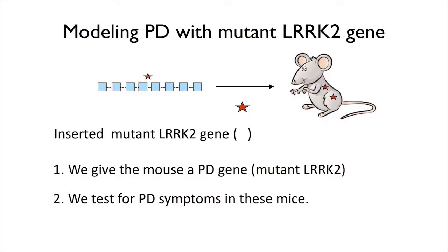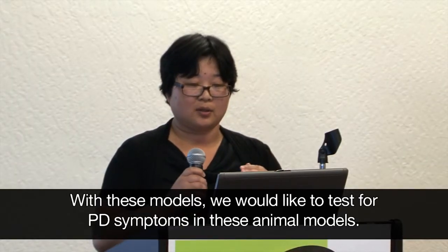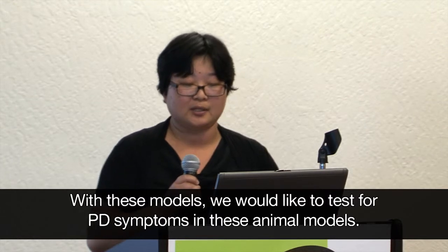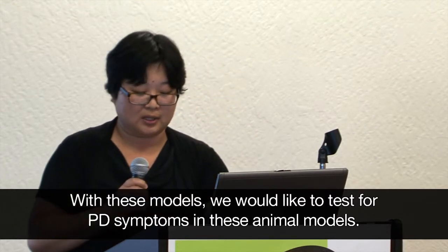What we do is we give the mouse a PD gene. Here, we use the muting LAC2. It means this is from a human patient's mutation. And this will cause the human to have the PD phenotype, the symptoms. With these models, we would like to test for the PD symptoms in these animal models.